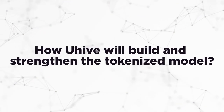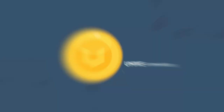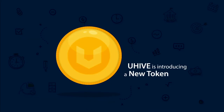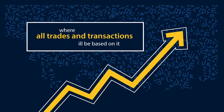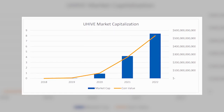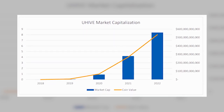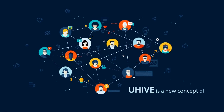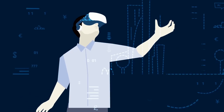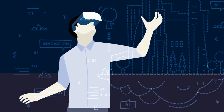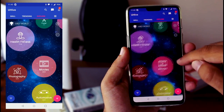How will U-Hive build and strengthen the tokenized model? Monetization of social impacts is proposed as a sustainable part of the networking economy. Businesses will establish their online presence, offer services and products, reward users for participation in promotional campaigns and create live advertising. Not only will businesses reward users, but the system itself will do so given that users remain active and spend a lot of time on the network.